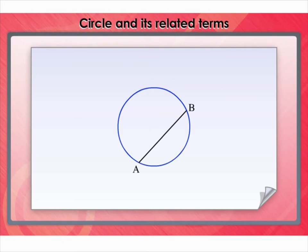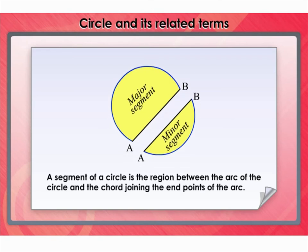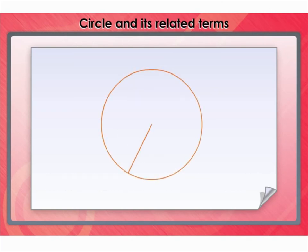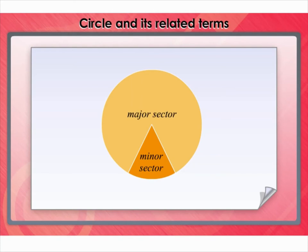In this figure, AB is a chord of the circle. Chord AB divides the circle into two regions: the smaller region is the minor segment and the larger region is the major segment. A segment of a circle is the region between the arc of the circle and the chord joining the endpoints of the arc. The region between an arc and the two radii joining the center to the endpoints of the arc is called a sector. The major arc forms the larger or major sector, and the minor arc forms the smaller or minor sector.